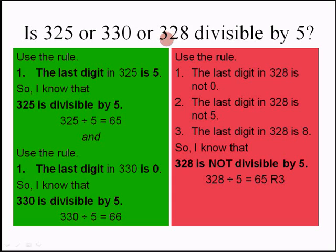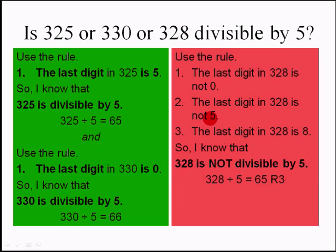To find whether the number 328 is divisible by 5, use the rule: the last digit in 328 is not 0, and neither is it 5. The last digit in 328 is 8, so I know that 328 is not divisible by 5.